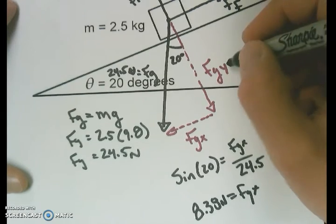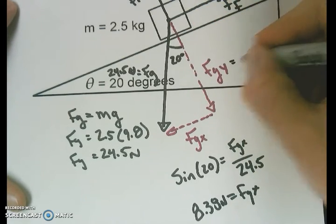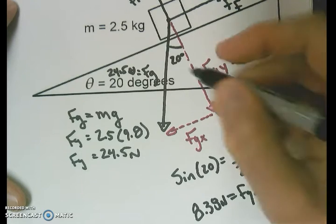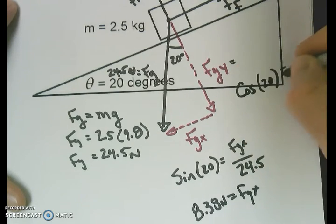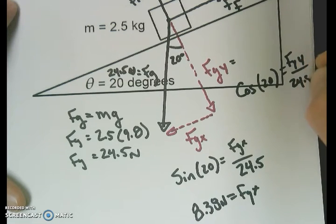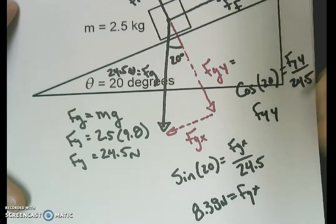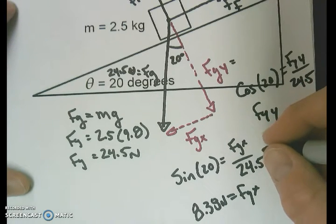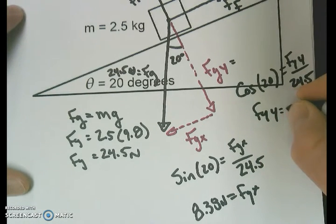Do the same for my y. It's the adjacent side, so this is going to be cosine of my angle, 20. It's going to be equal to my adjacent FGY over 24.5. So my FGY is going to end up being cosine of 20 times 24.5. I get 23.02, so we'll call that 23.02 newtons.